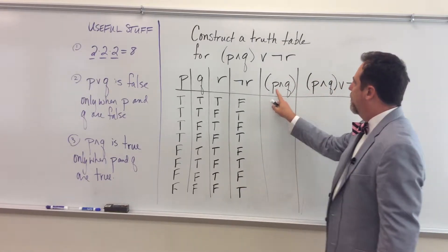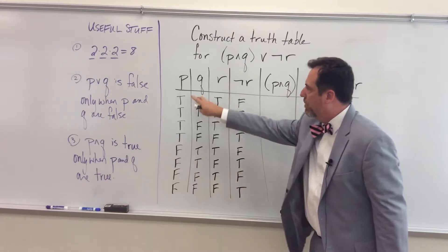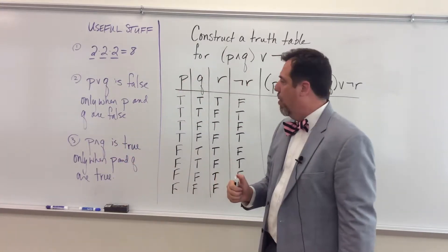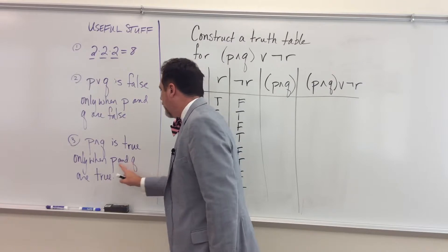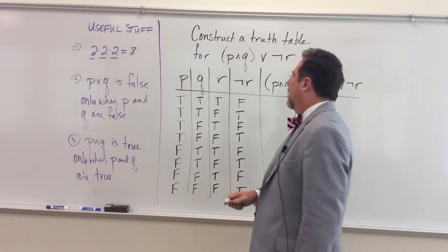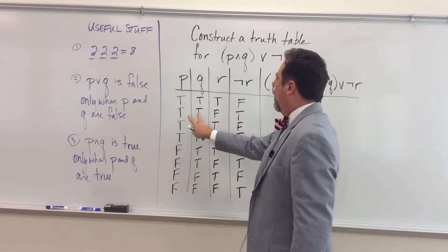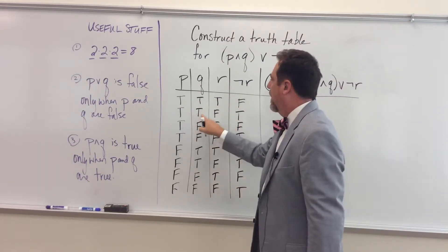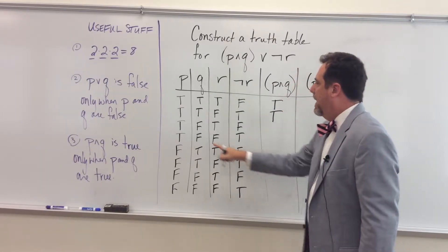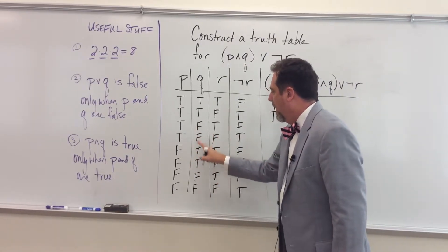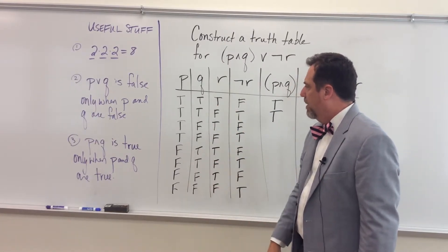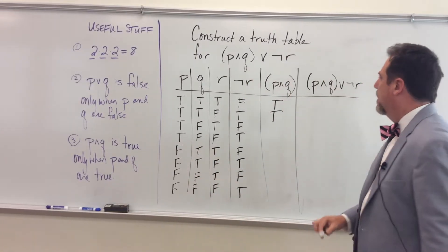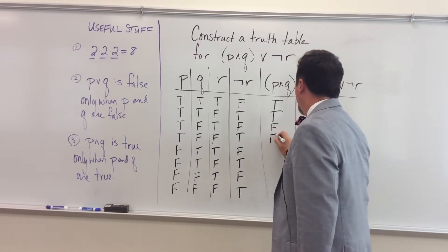Now I want to find the value for P and Q based on these original truth values. P and Q is true only when P and Q are individually both true — that kind of makes sense. So I look for cases where P and Q are both true: that's the first row and the second row. In every other row I have either true/false, false/true, or false/false, so everybody else in this column is false.